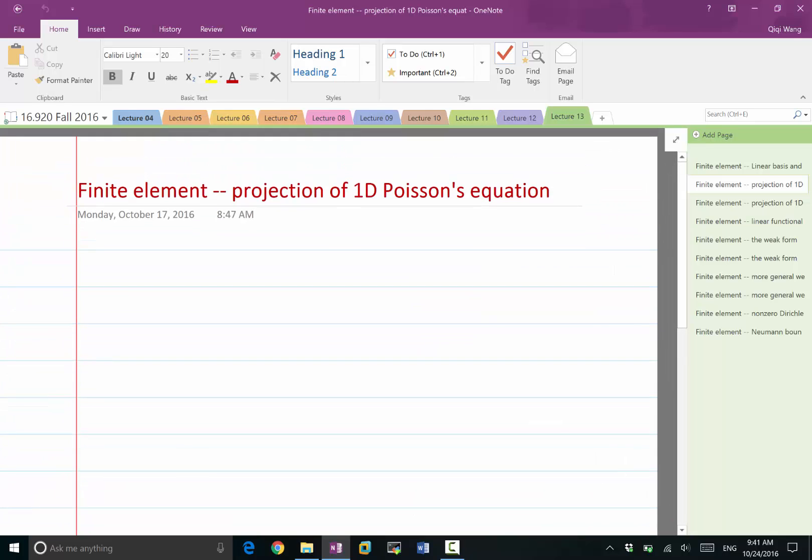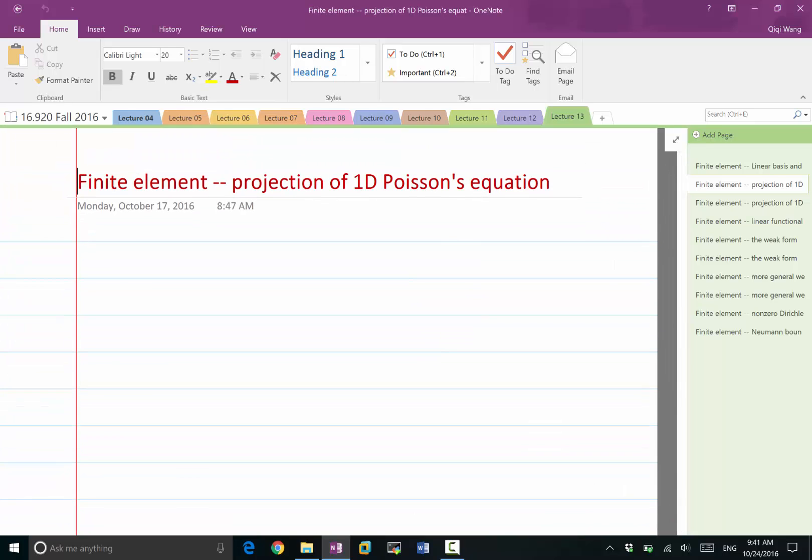The example I'm going to give is the one-dimensional Poisson's equation. The Poisson's equation is the second-order derivative of u plus a known function f is equal to 0.